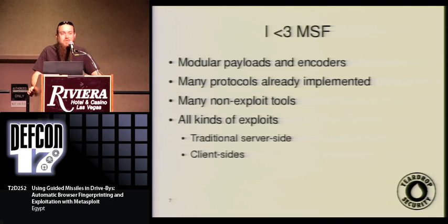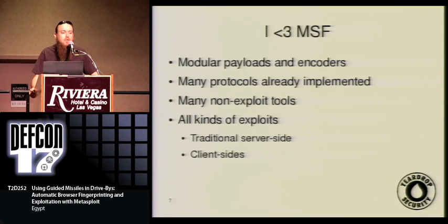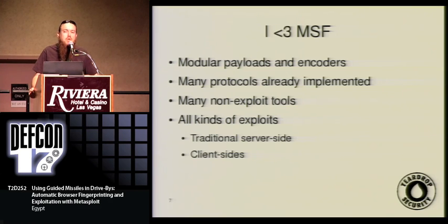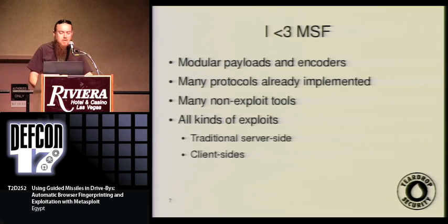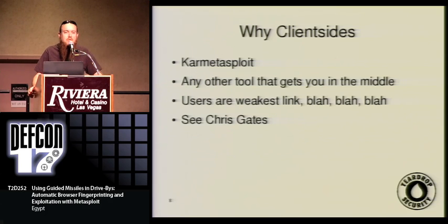There are a bunch of protocols that already work in Metasploit, so you don't have to do all the boilerplate work to make HTTP or SMTP or whatever work with your exploit. There's also stuff for finding vulnerabilities and for taking crash POCs to a real exploit using pattern offset tools. Metasploit supports the traditional server-side exploits and also client-sides, which is what we're going to be talking about today. And if you don't believe me that client-sides are important, talk to Chris Gates — he's done a whole bunch of stuff about client-sides.